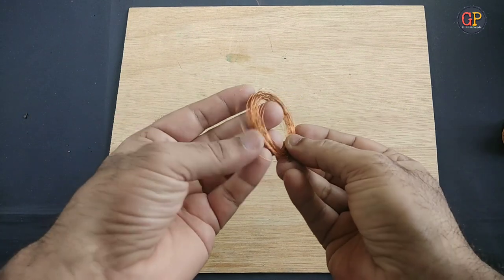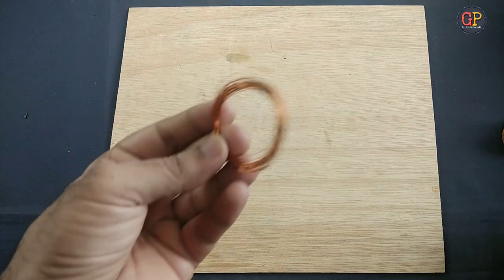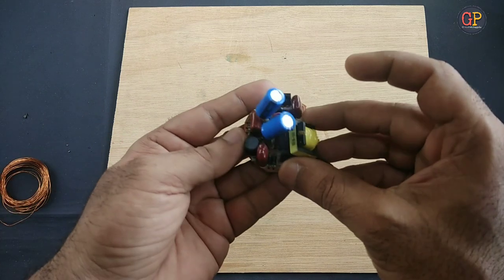First of all, we need insulated copper wire for about 1 meter. This can easily be found in a CFL circuit board like this.